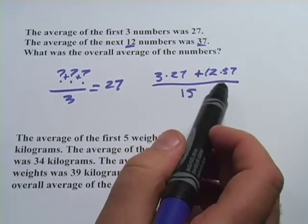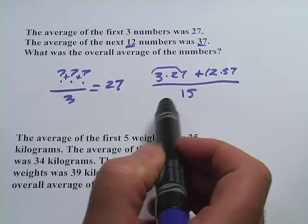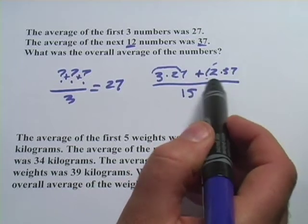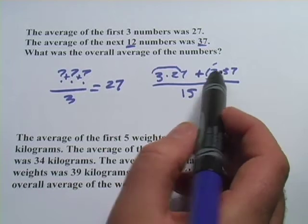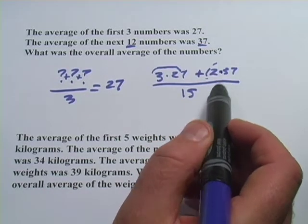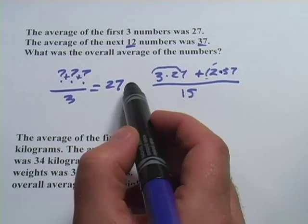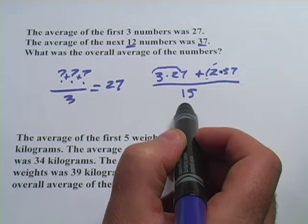So just to explain this, just to recap, this is really 27. This chunk right here is 27 plus 27 plus 27. This chunk right here is 37 added together 12 times. I'm just multiplying because it's an easier, shorter way to put this. 12 times 37 is the same thing as 37 added to itself 12 times. So this really is set up like an average problem now. And it's divided by the total number of numbers.